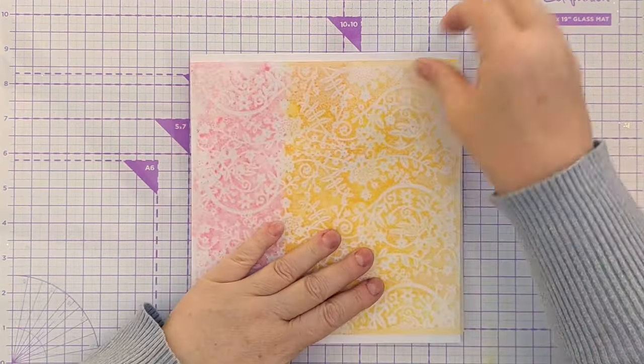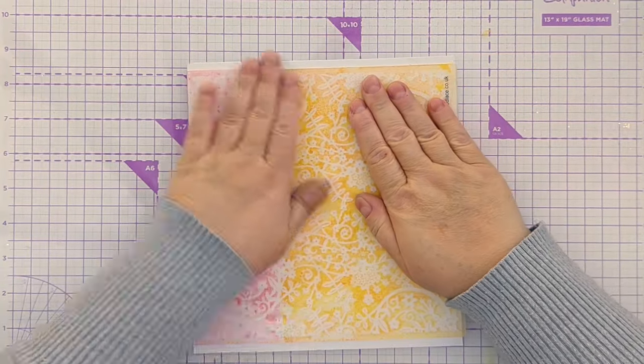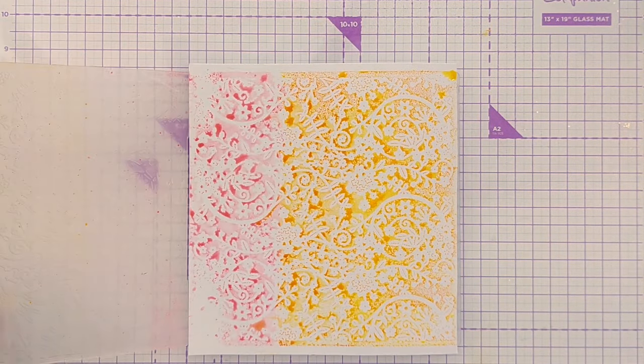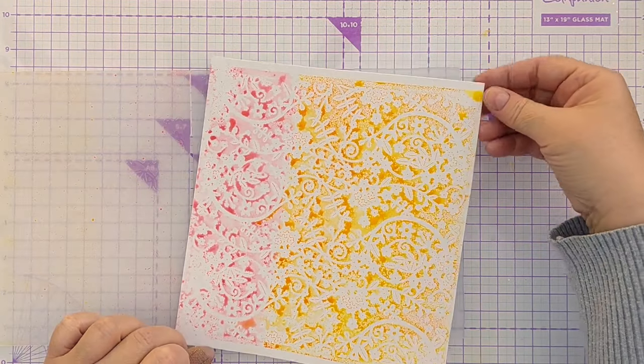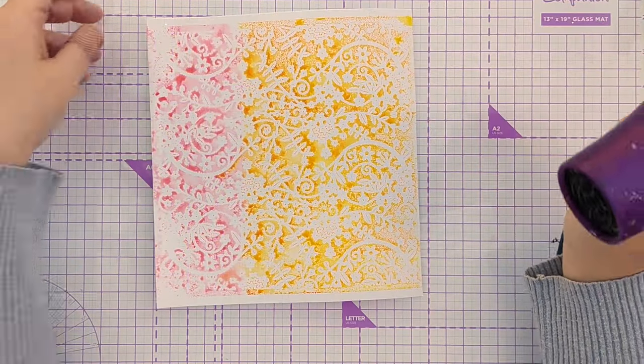I'm going to flip this over actually so I can see what I've got on the other side. I can lift that up carefully and now I've got a lovely watercolory background and that can just be rinsed under the tap. And I'll dry this with my hairdryer.